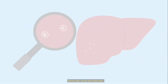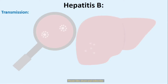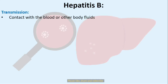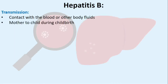Hepatitis B Transmission: Hepatitis B is transmitted through contact with the blood or other body fluids — for example, saliva, semen, and vaginal fluid — of an infected person. It can be passed on from mother to child during childbirth.